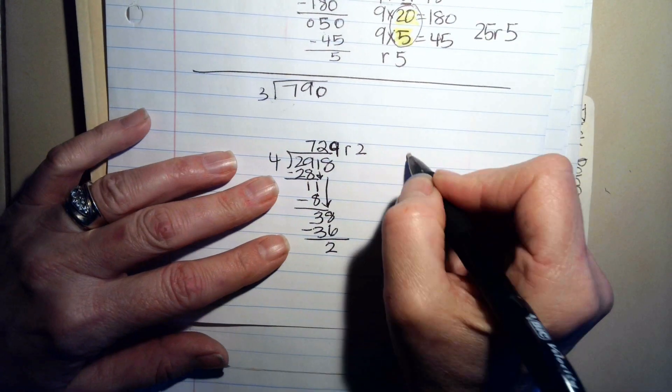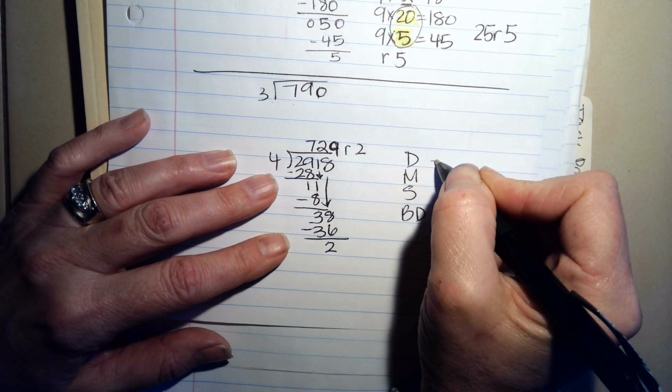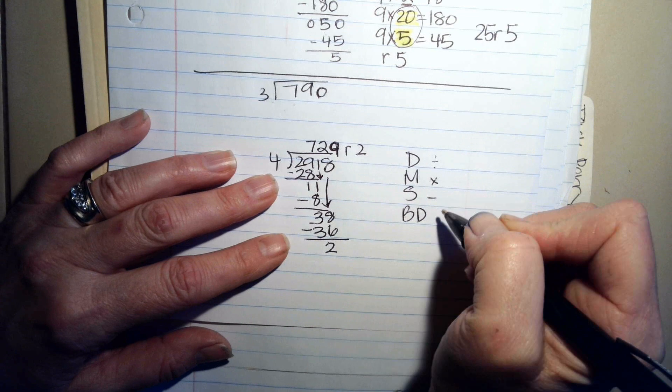So for this one, you do daddy, mommy, sister, brother, dog. Divide, multiply, subtract, bring down.